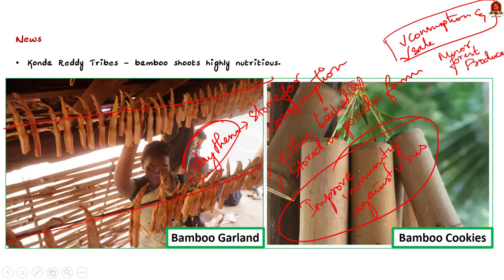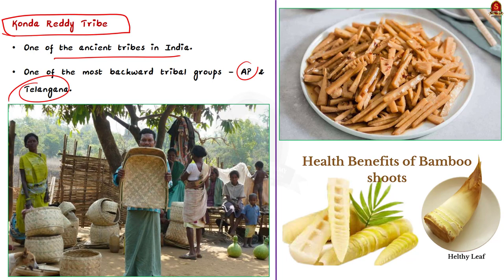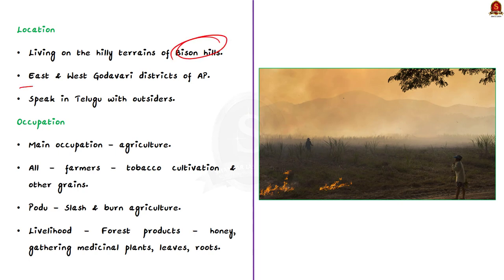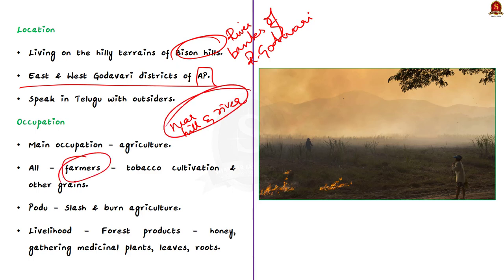The Kondareti tribes are one of the ancient and most backward tribal groups in the states of Andhra Pradesh and Telangana. They live on the hilly terrains of Bison Hills, spread across East and West Godavari districts of Andhra Pradesh, along the banks of the river Godavari. The Kondaretis normally speak Telugu with outsiders. Their main occupation is agriculture, specifically cultivation of tobacco and other grains. They cultivate crops in a distinct way called Pudu, which is another name for slash and burn agriculture.